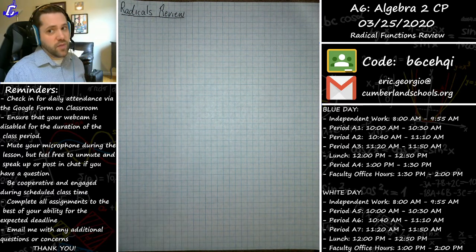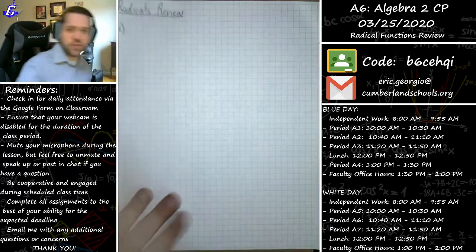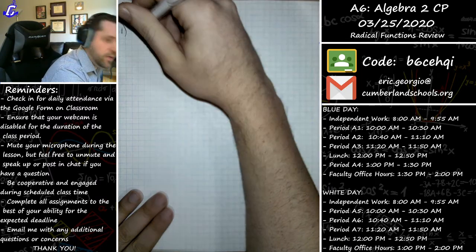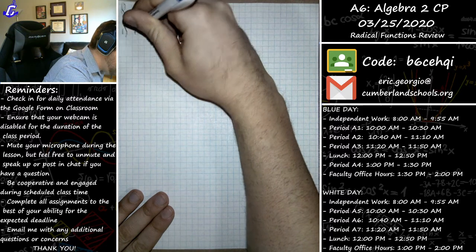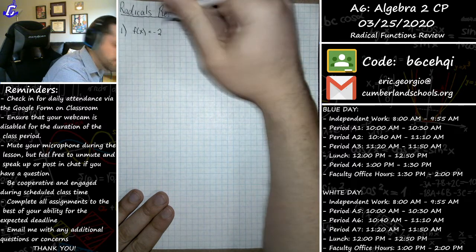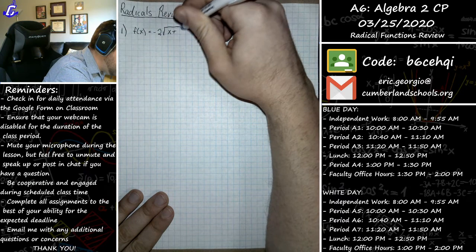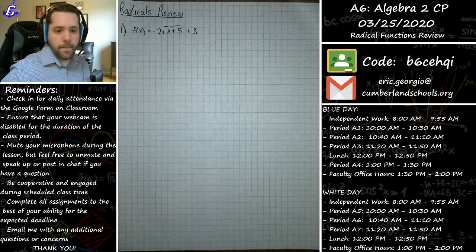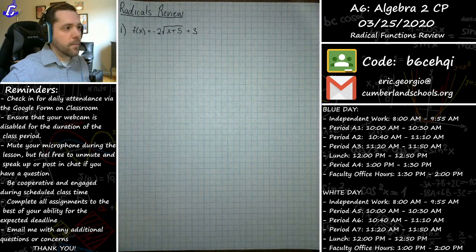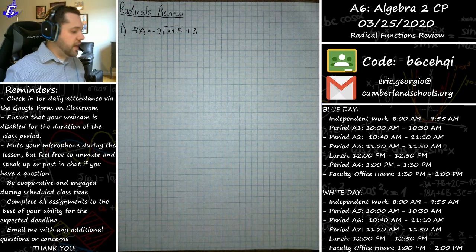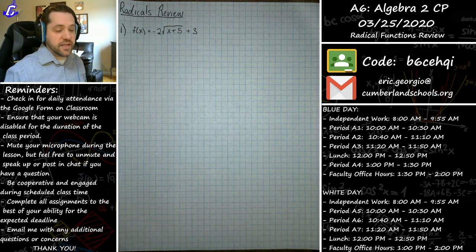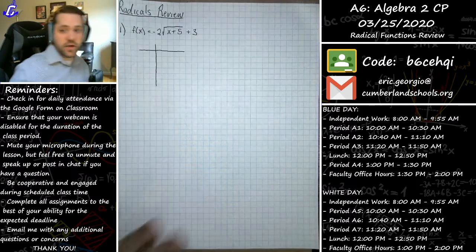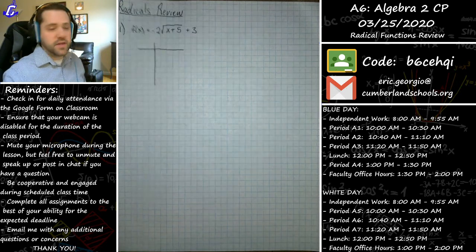Starting with problem number one — it's a nice basic square root graph that shows all the fundamentals of what you need to know. We have the function f(x) = -2√(x + 5) + 3. We're going to try to sketch a graph. When you graph a square root function, it's all about establishing goals — values I'd like to plug in so I'm not dealing with decimals or fractions.